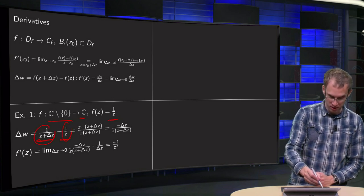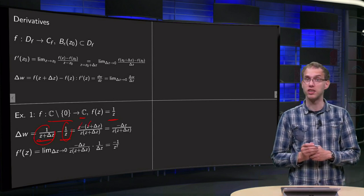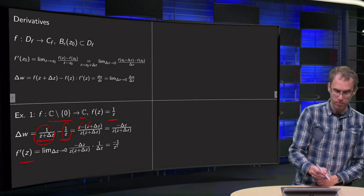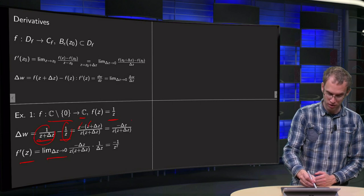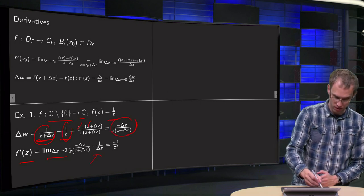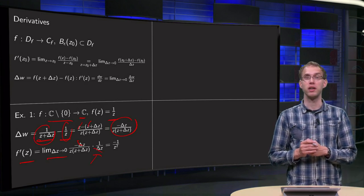And you see that if you take them together the z's cancel out, and we get minus delta z over z times z plus delta z. Then f prime of z, you have to take the limit of delta z to 0 of delta w divided by delta z. You see the delta z's cancel out, and you can just take the limit and you get minus 1 over z squared.